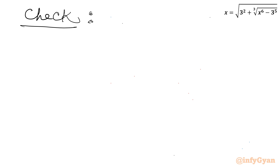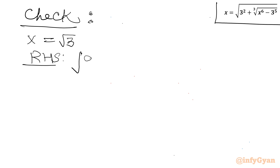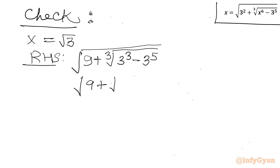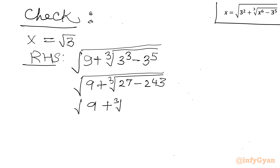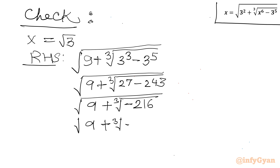Now I am going to verify. Check: x = √3. Starting from the RHS: √(3² + ∛((√3)⁶ − 3⁵)) = √(9 + ∛(3³ − 243)) = √(9 + ∛(27 − 243)) = √(9 + ∛(−216)). Since 216 = 6³, this is √(9 + ∛(−6³)) = √(9 − 6) = √3, which matches the LHS.